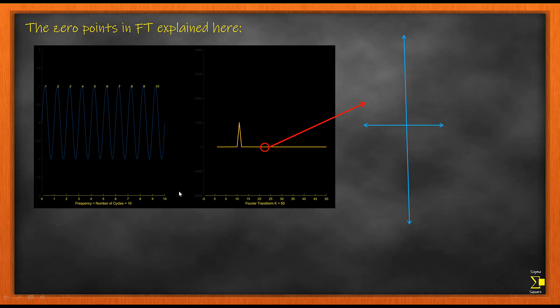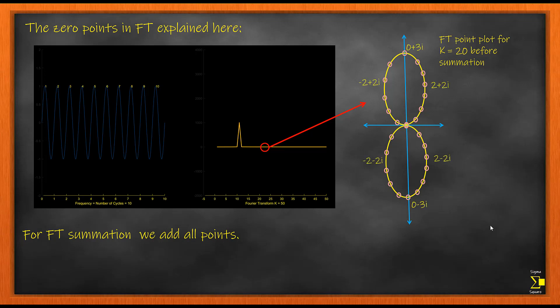What happens is for the 0 values, the FT cycles look like symmetrical blobs, and they are equally distributed in the positive and the negative axis. So let's take some sample points. In order to get the Fourier Transform frequency representation, we are adding all the points, that is the summation, and then we are taking the magnitude.